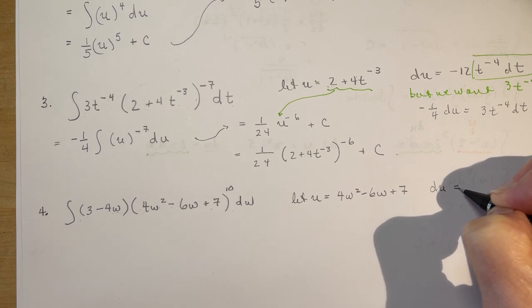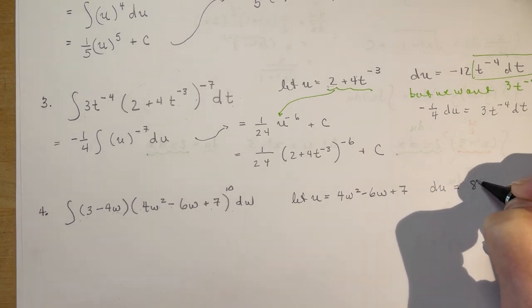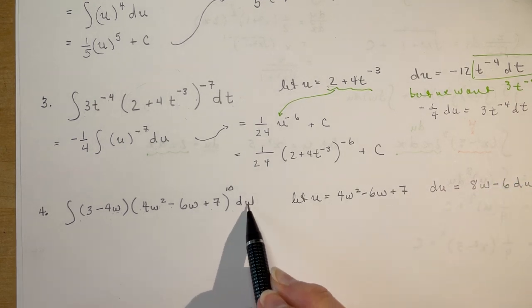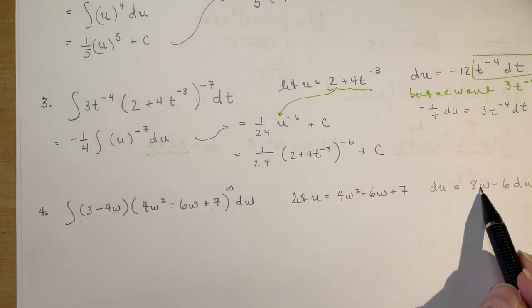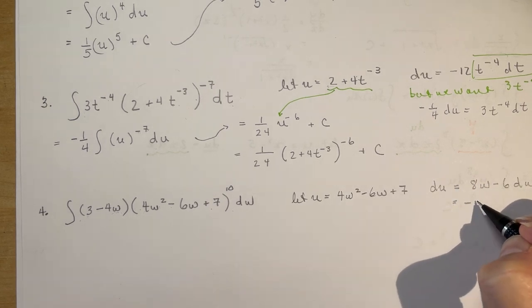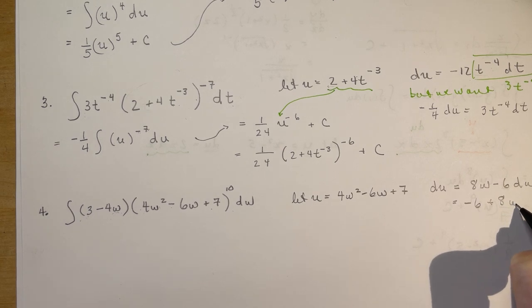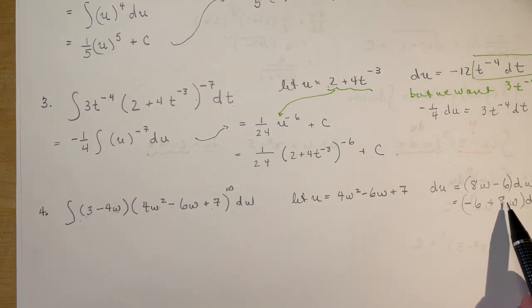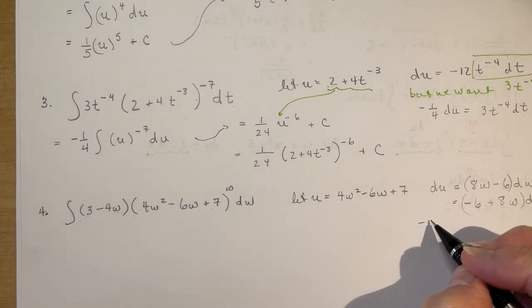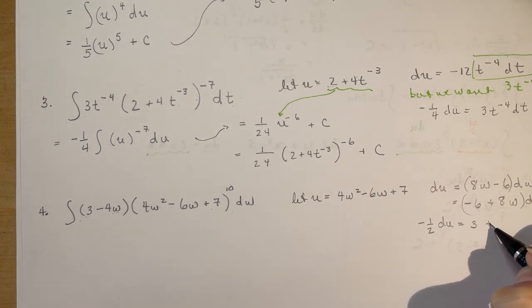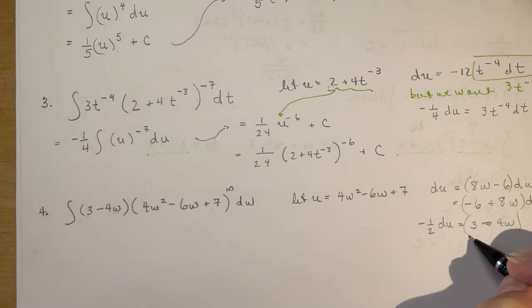So, that means that du is going to be equal to 8w minus 6 dw. So, I've got dw, 3 minus 4w, and 8w minus 6 dw's. You might want to rewrite this like this. Just might be easier to see. I can see that this is minus 2 of this. So, if I do minus 1 half du, I'm going to get 3 minus 4w dw.